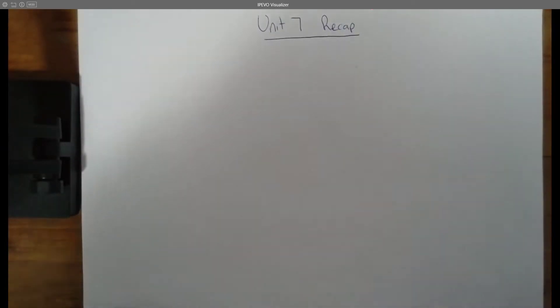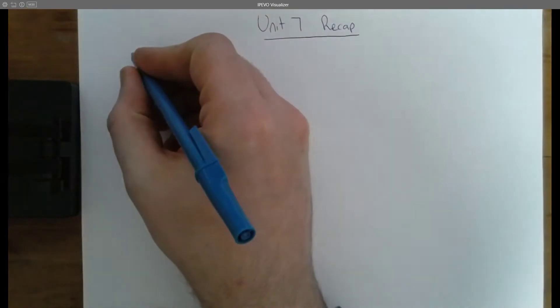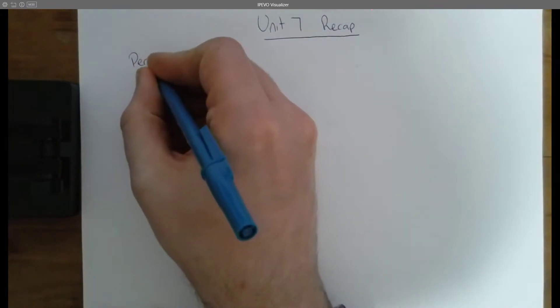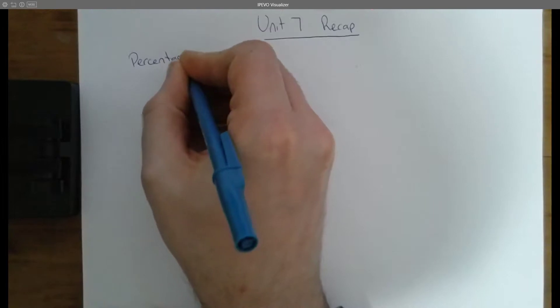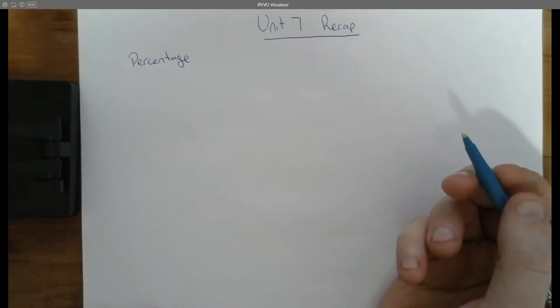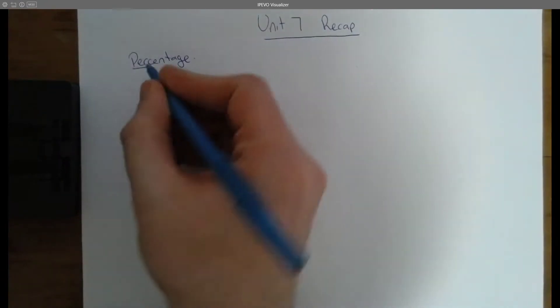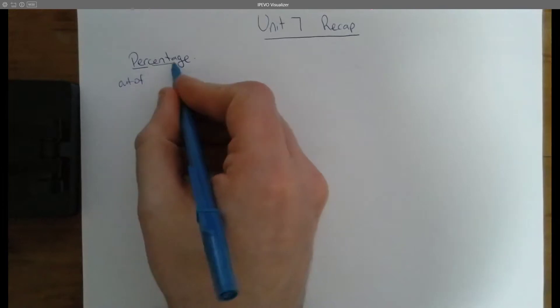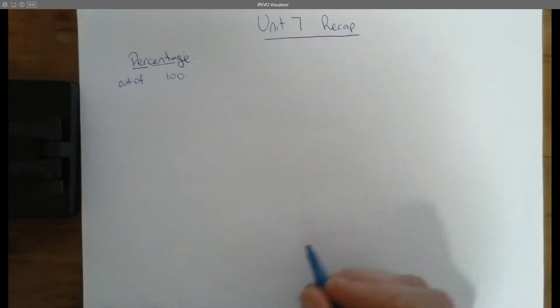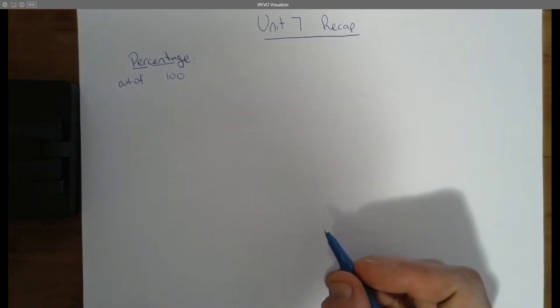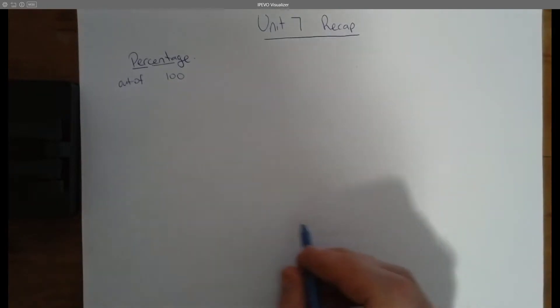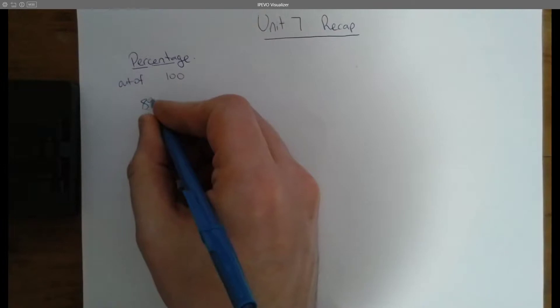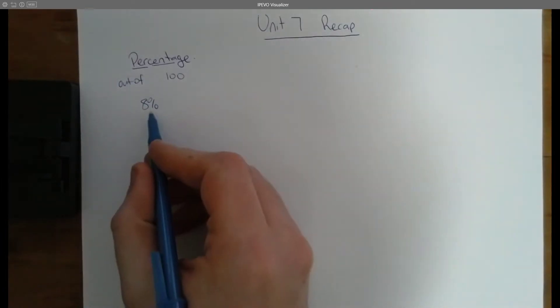First, we started off by talking about what a percent was, or what percentages were. And we talked about how just this word itself, percent, literally means per, or out of, cent 100. So when we're talking about a percent, we're talking about a number that is out of 100. So if you had 8%, this is the percent sign, we could rewrite that and say that's the same as 8 out of 100.